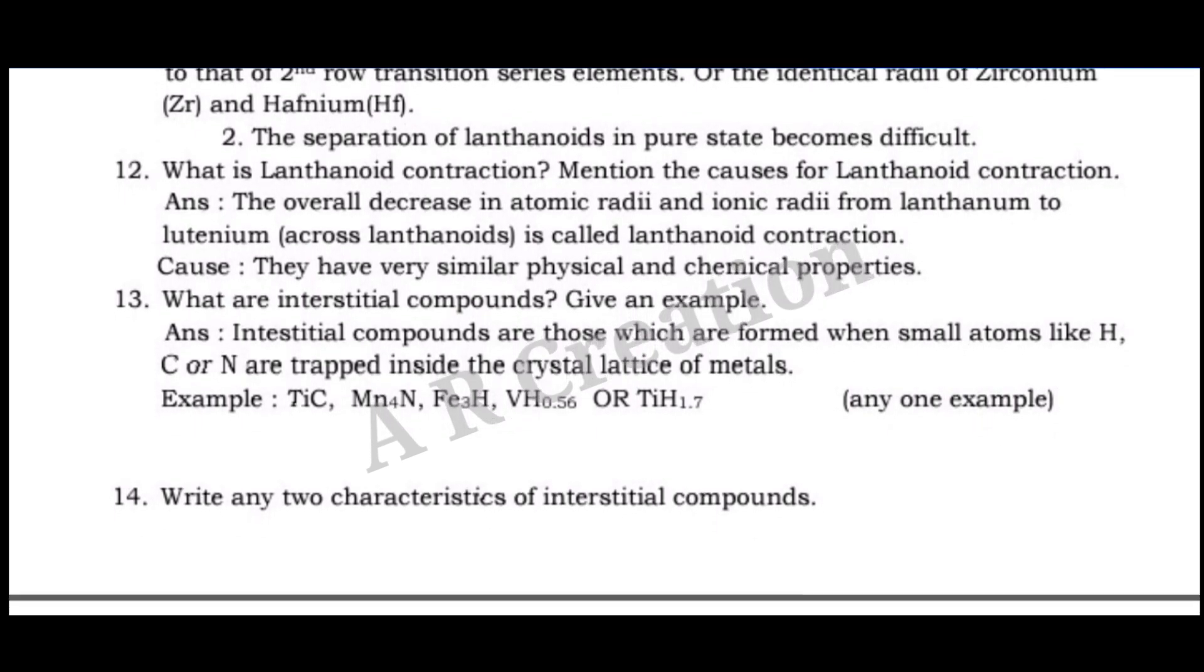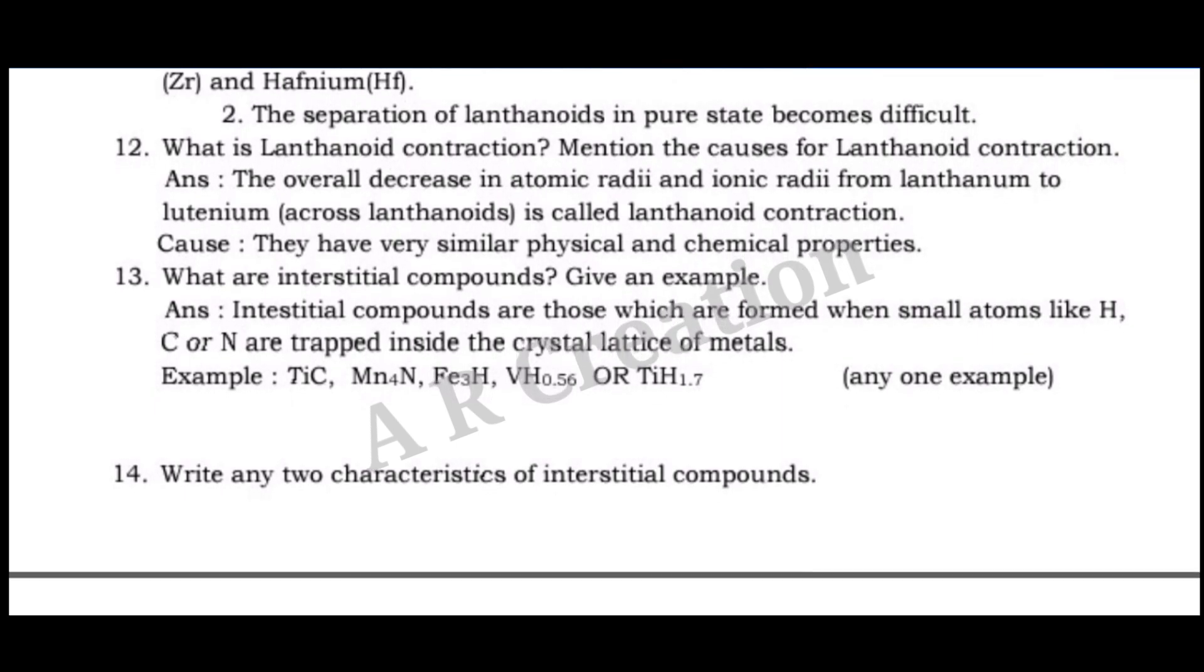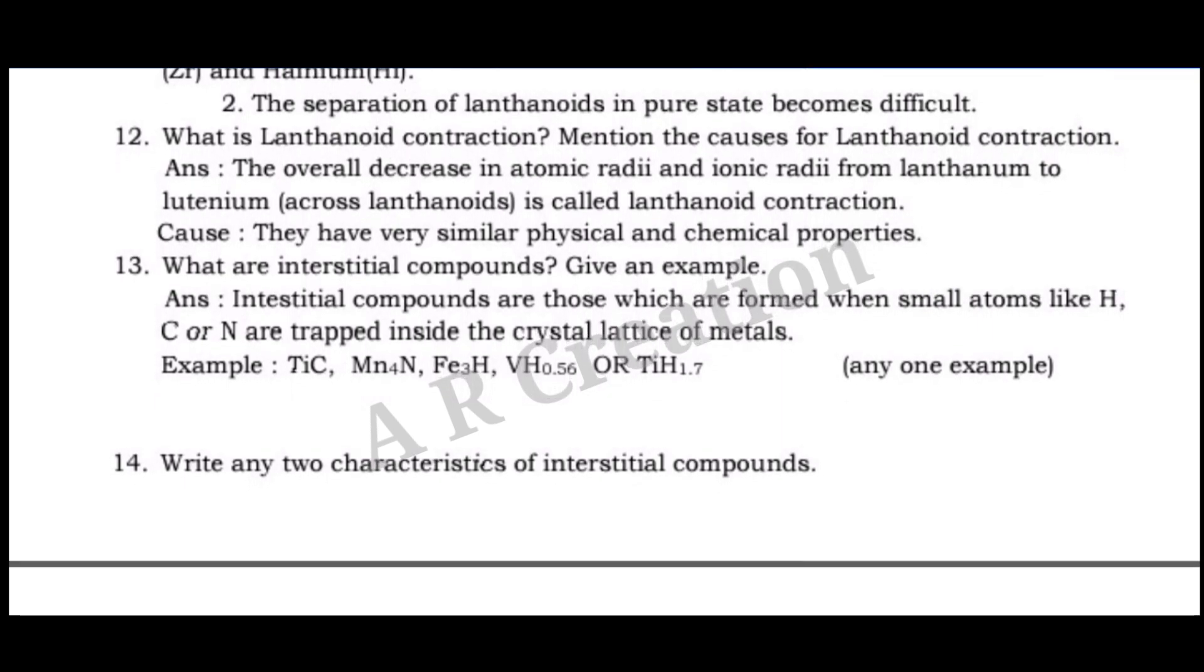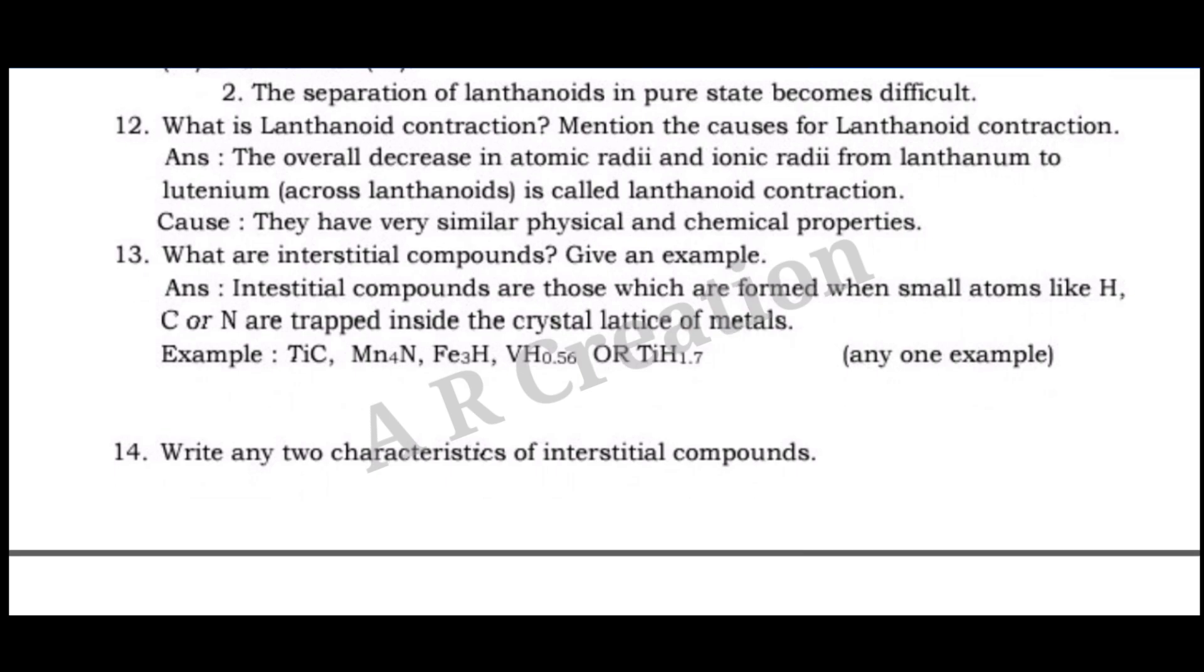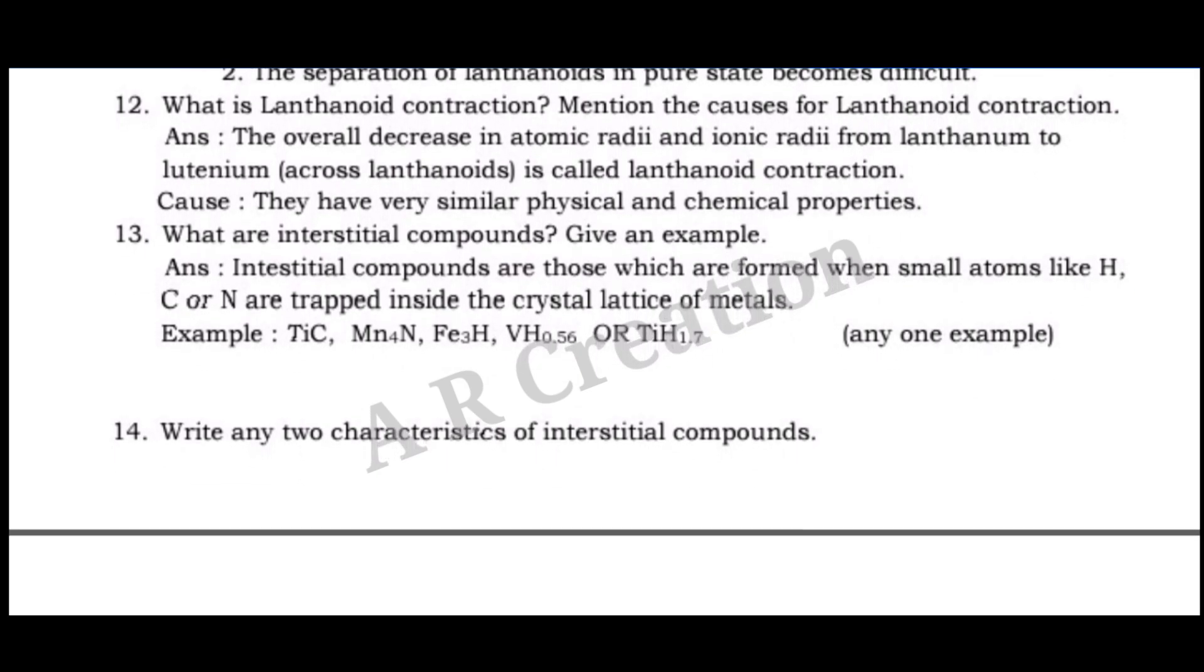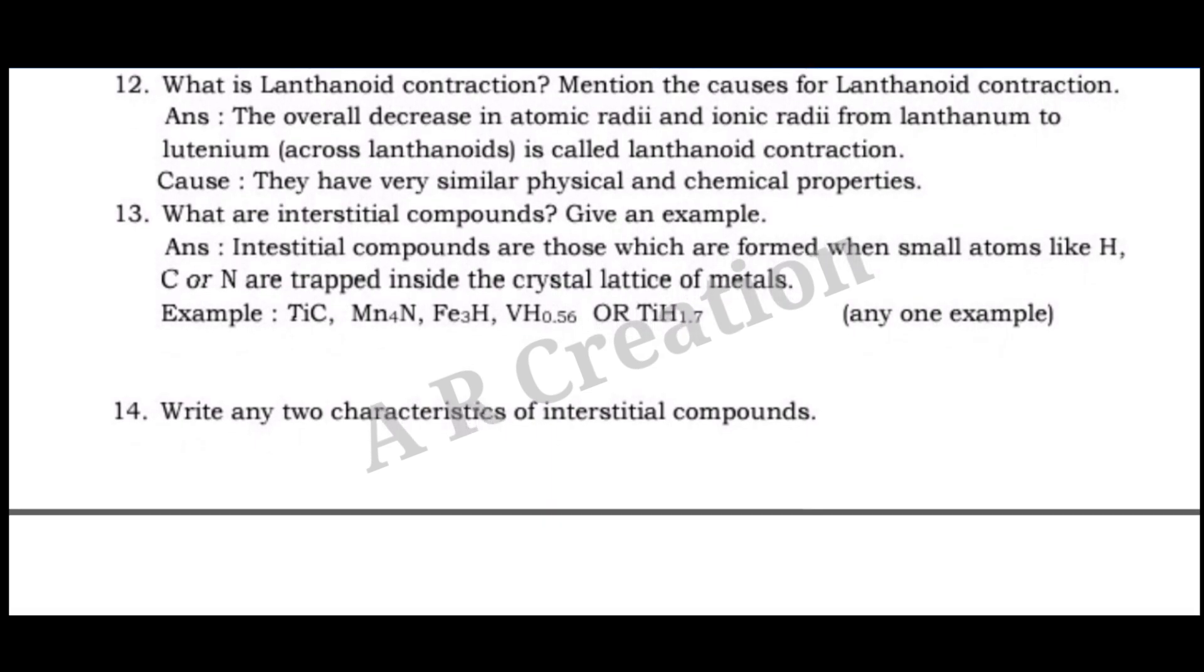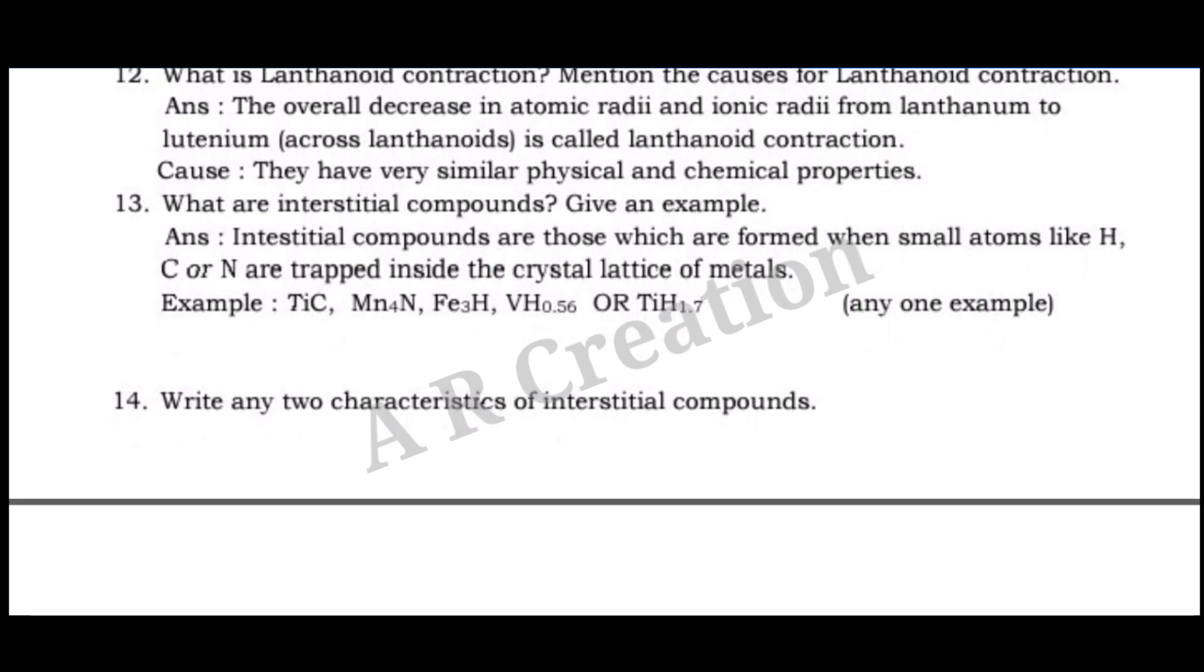Question 13. What are interstitial compounds? Give an example. Answer: Interstitial compounds are those which are formed when small atoms like H, C or N are trapped inside the crystal lattice of metals. Example: TiC, Mn4N, Fe3H, VH0.56 OR TiH1.7 (any one example).